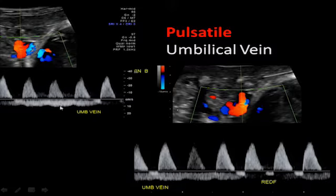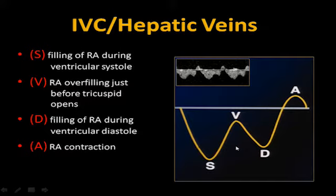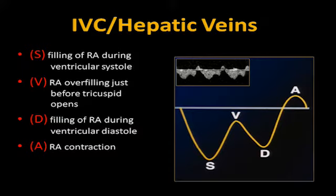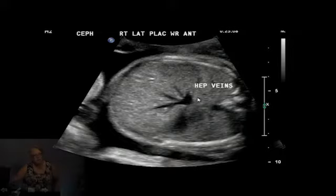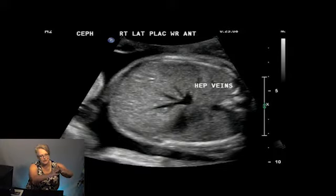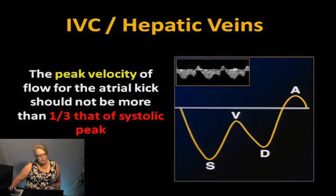We should be sampling at the abdominal insert rather than just looking at the umbilical artery on top and umbilical vein on the bottom from the cord. For the IVC and hepatic veins, looking at S, V, D, and A ratio: S is filling of the right atrium during ventricular systole, V is overfilling just prior to tricuspid opening, D is filling during ventricular diastole, and A is right atrial contraction. On a cross-section near the heart, hepatic veins come back to the IVC — be careful not to confuse hepatic veins with ductus venosus. The hepatic vein peak velocity from atrial kick should not be more than one-third of the systolic peak. If velocity is less than 30, reset and re-measure to confirm you're truly in the ductus.